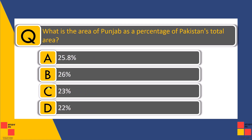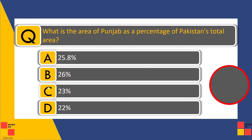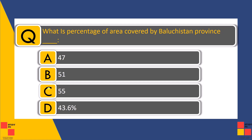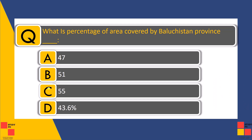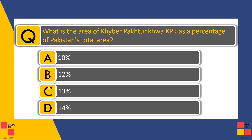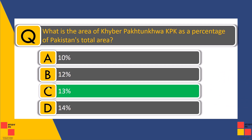What is the area of Punjab as a percentage of Pakistan's total area? — 25.8 percent. What is the percentage of area covered by Balochistan province? — 43.6 percent. What is the area of KPK as a percentage of Pakistan's total area? — 13 percent.